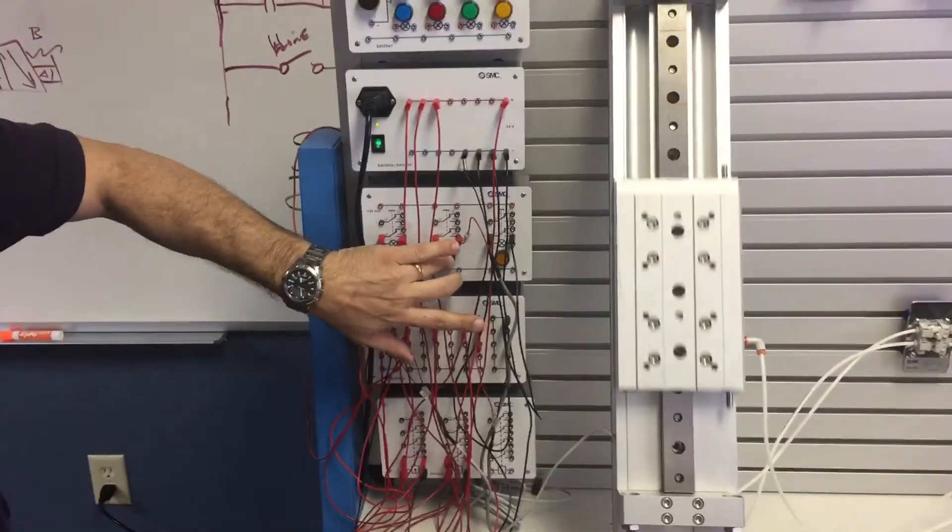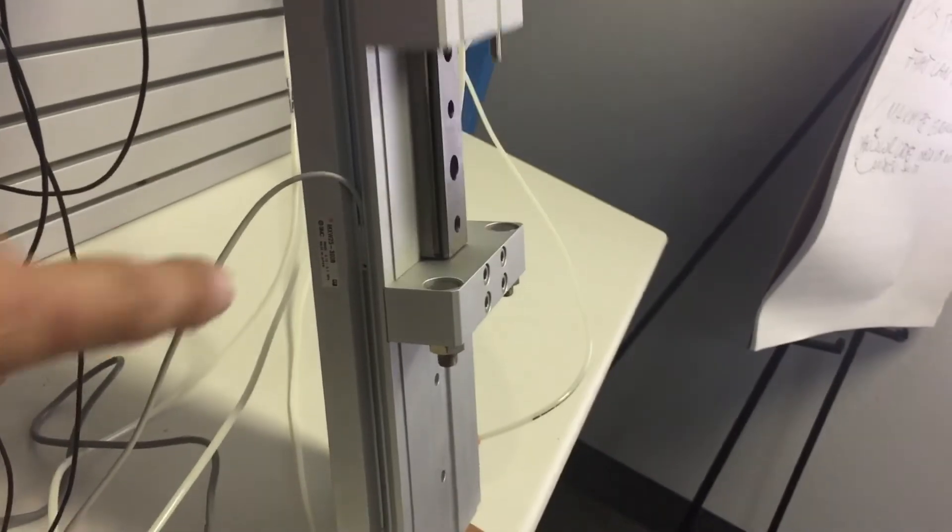We're going to do this again. Dan, if you want to pan on the sensor, go a little further back. You can see when it hits that sensor, it stops the cylinder.